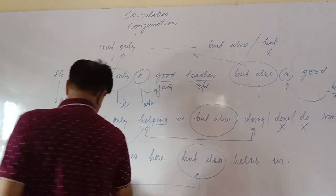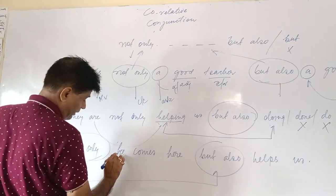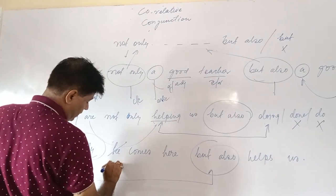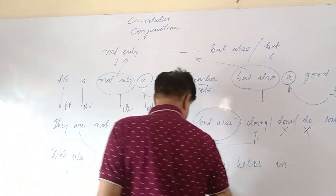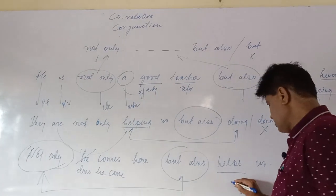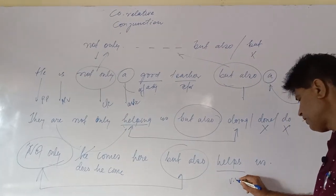But your first clause, I mean main clause, is wrong. 'Does he come' will be correct. Not only does he come here but also helps us. The second sentence will be V1 form.